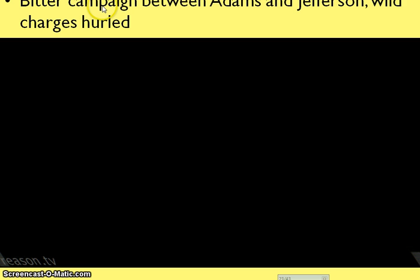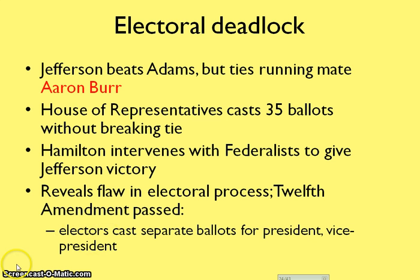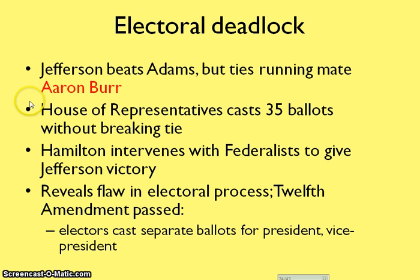We have a bitter campaign between Adams and Jefferson in the third election in the United States. Adams and Jefferson are basically hurling insults at each other, marking a very negative campaign in American history. Jefferson beats Adams by only eight electoral votes. However, this represents a problem in the voting system because Jefferson ties with Aaron Burr — Aaron Burr gets the same amount of votes as Jefferson, and they both beat Adams.